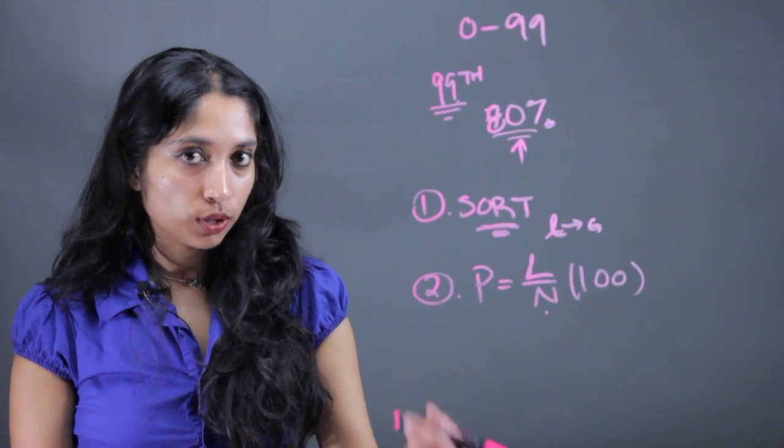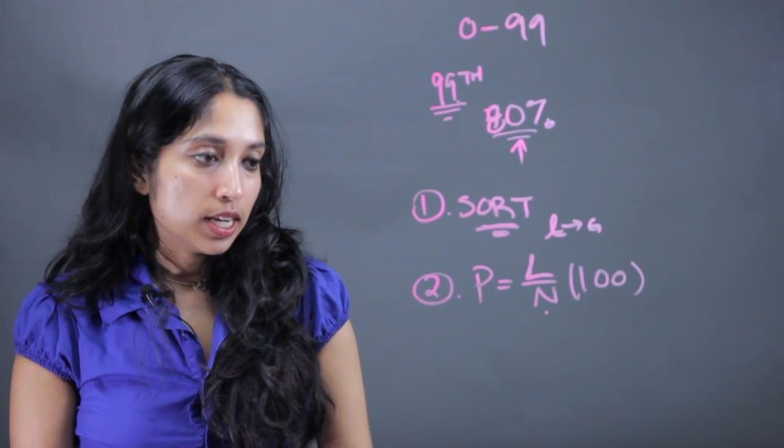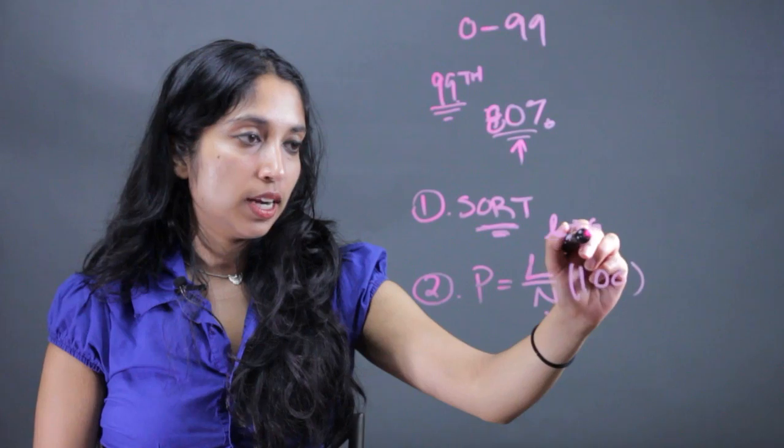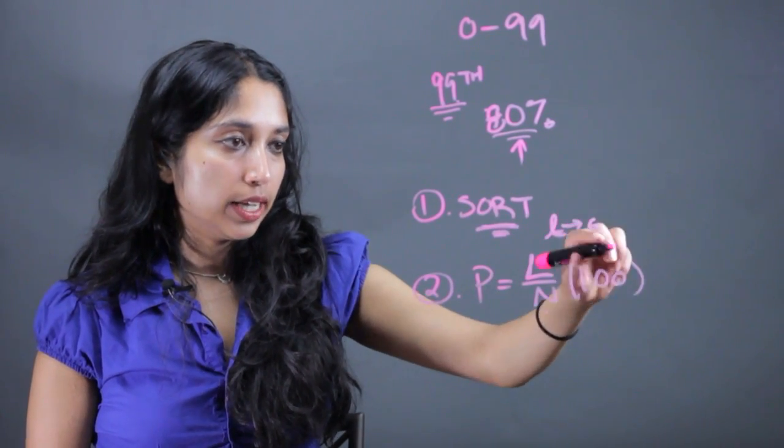So say I wanted to solve for the percentile of someone who scored an 89 on the test. So I would just look at these tests that I have sorted, and I would count the number of observations until I hit 89.